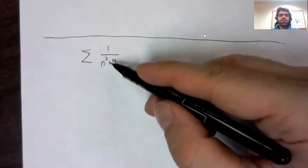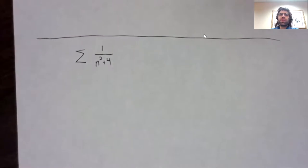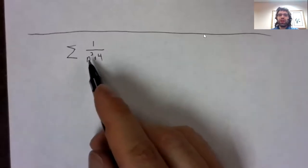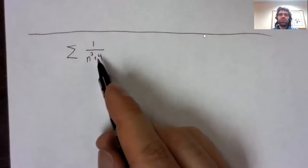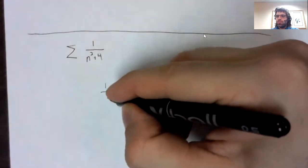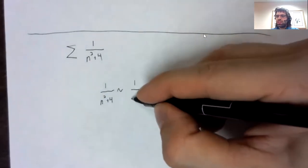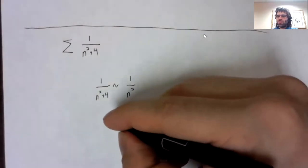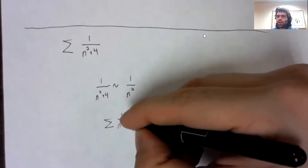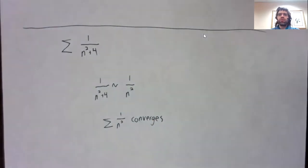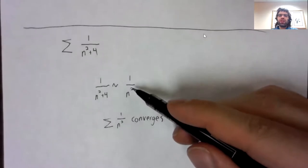That when n is large, this plus four might as well not be there. You know, 10 trillion versus 10 trillion and four, it's basically 10 trillion. A very large number, this addition isn't doing much. So I'm going to argue that this looks basically like this.